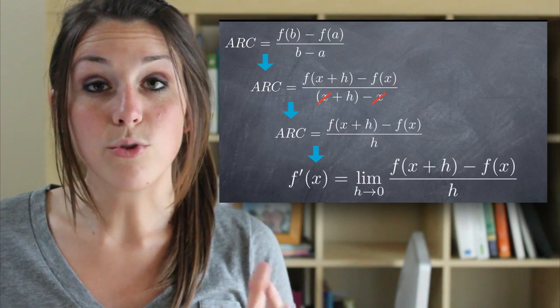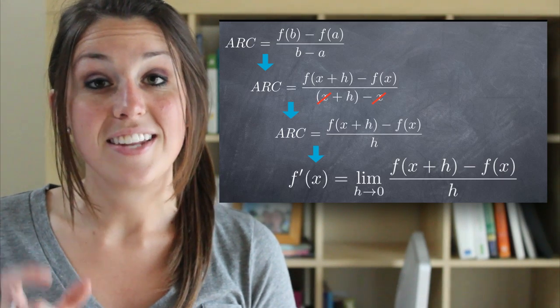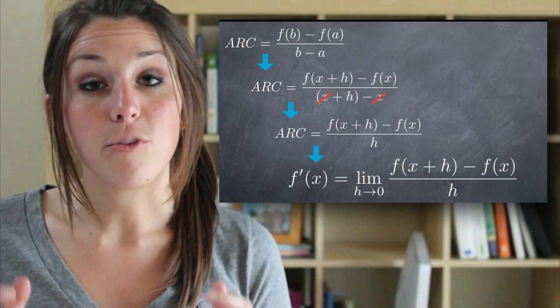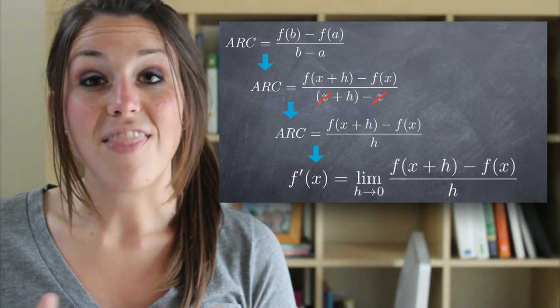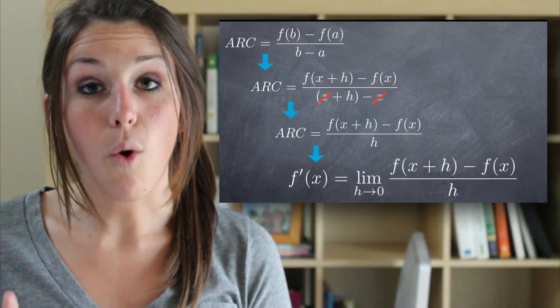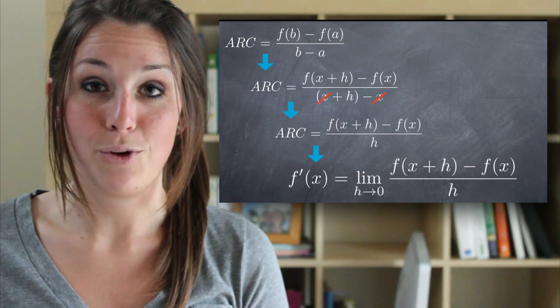In other words, as we bring those two points closer and closer together, h, which is the distance between the points, gets smaller and smaller, until eventually it becomes 0. And then we have the slope of the tangent line, or the instantaneous rate of change of the function at the tangent point.